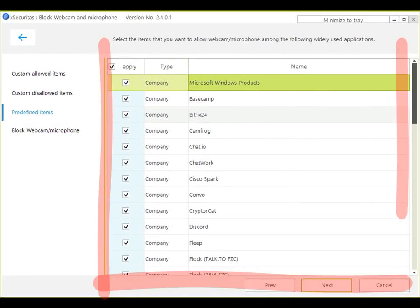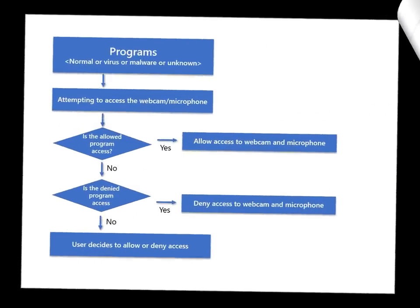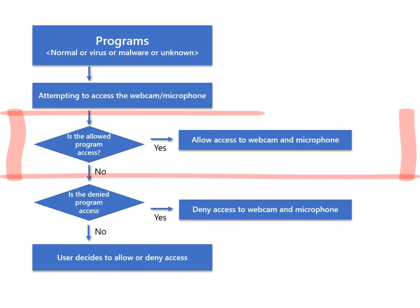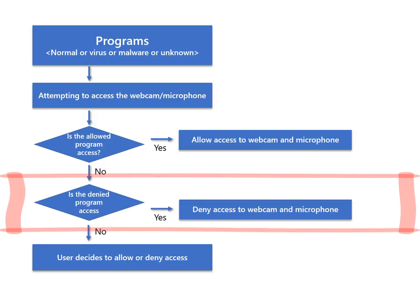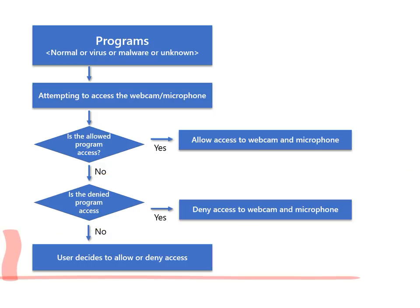For your convenience, we have predefined programs that are mostly used as allowed programs. If an allowed program attempts to use a webcam or microphone, it is accepted. If a program is set to deny, it will automatically shut down and block the webcam. If the program is neither an allowed program nor a denied program, it will prompt the user to decide whether to allow or deny.